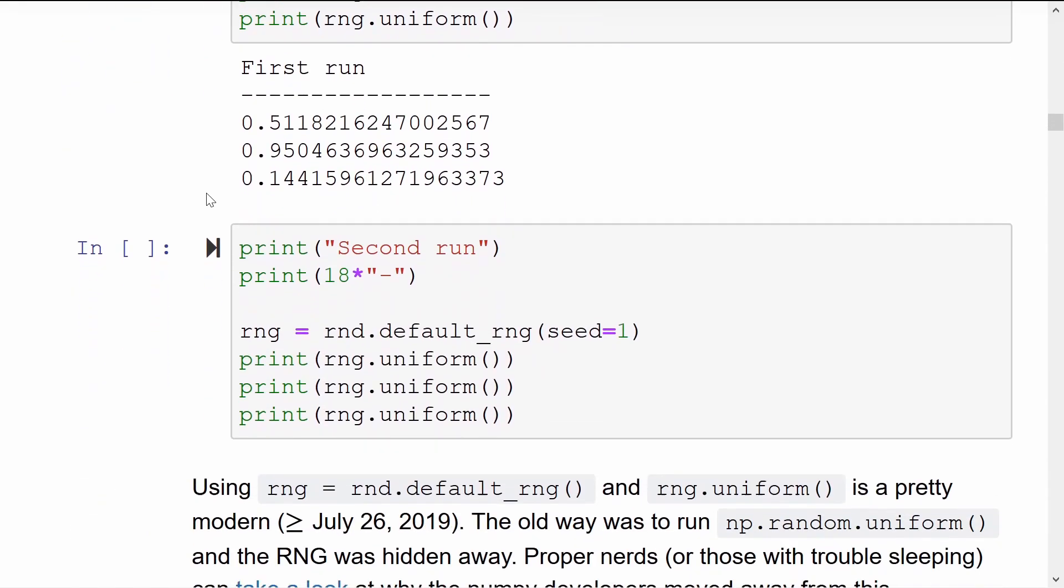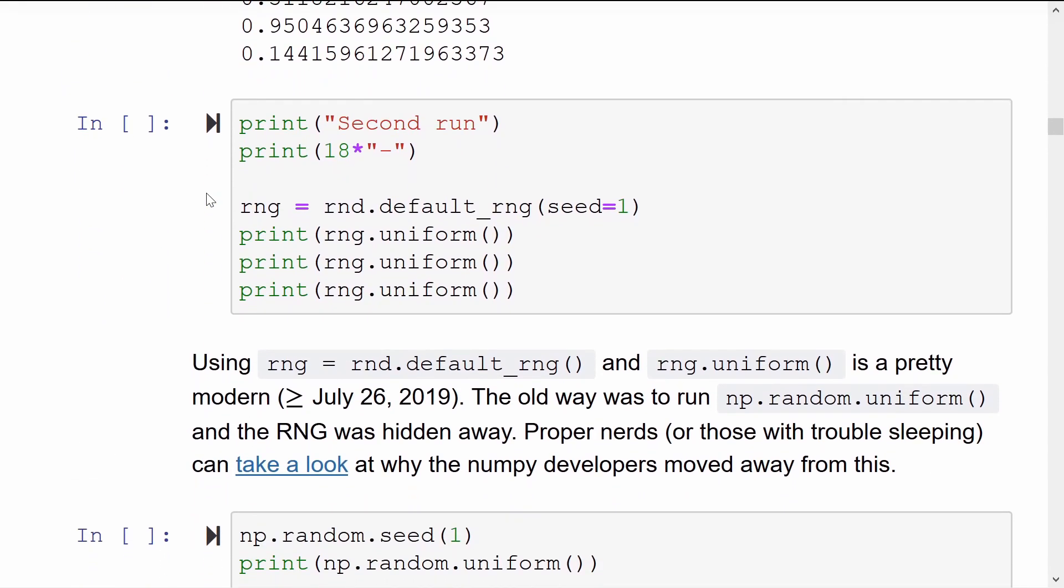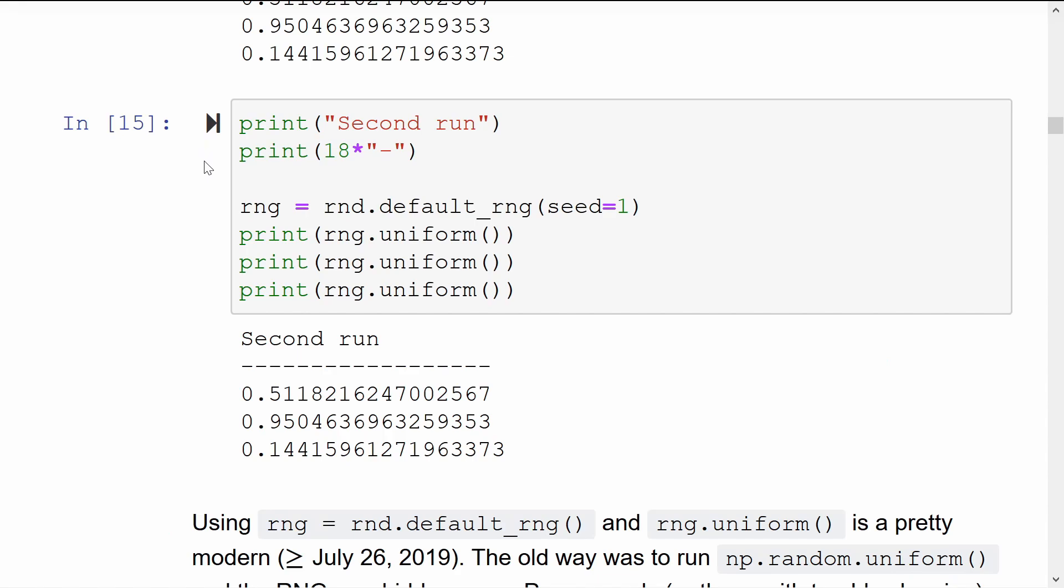If we were to come back and create another random number generator with the same seed, we'd see that we get the exact same random numbers. Good news. If you don't set the seed, Python will generate its own seed and it will be based off the time of day and other mysterious elements that it pulls from the operating system. It won't be reproducible.